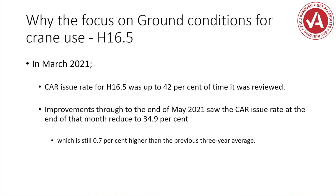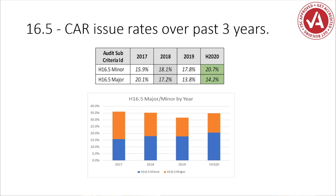That's still 7.7% higher than the previous three-year average. Looking at the actual CARs issued broken into major and minor: for minor, we started at 15.9% in 2017 and crept up to 20.7% in 2020. For major, we started at 20.1% and came down to 14.2%. A few things can be deduced from those figures. With major, we're getting better with the documented process and actually getting some implementation done. With minor, we're still finding that the implementation process is not occurring as documented, or the documentation fails to reflect what's actually happening on site.